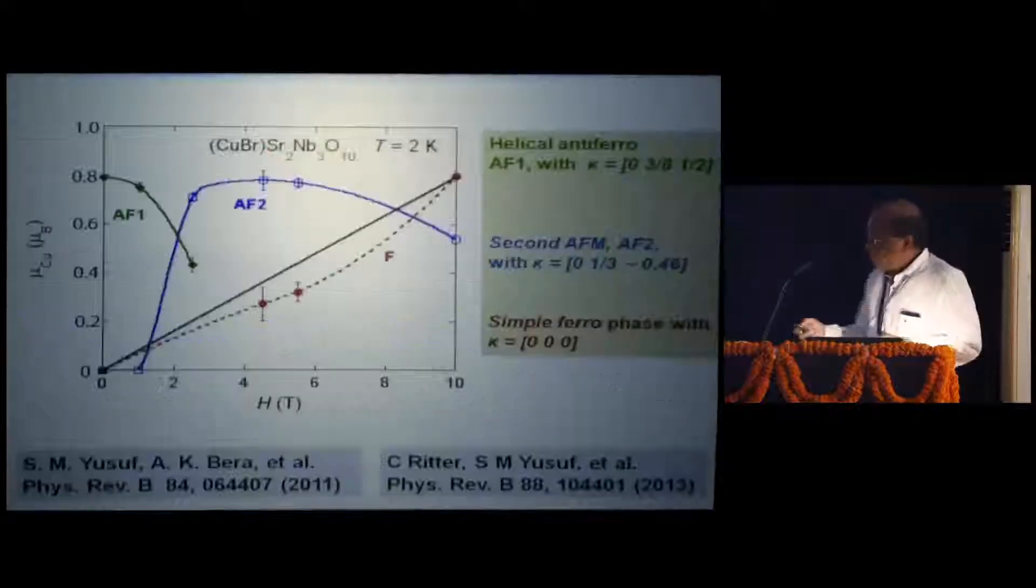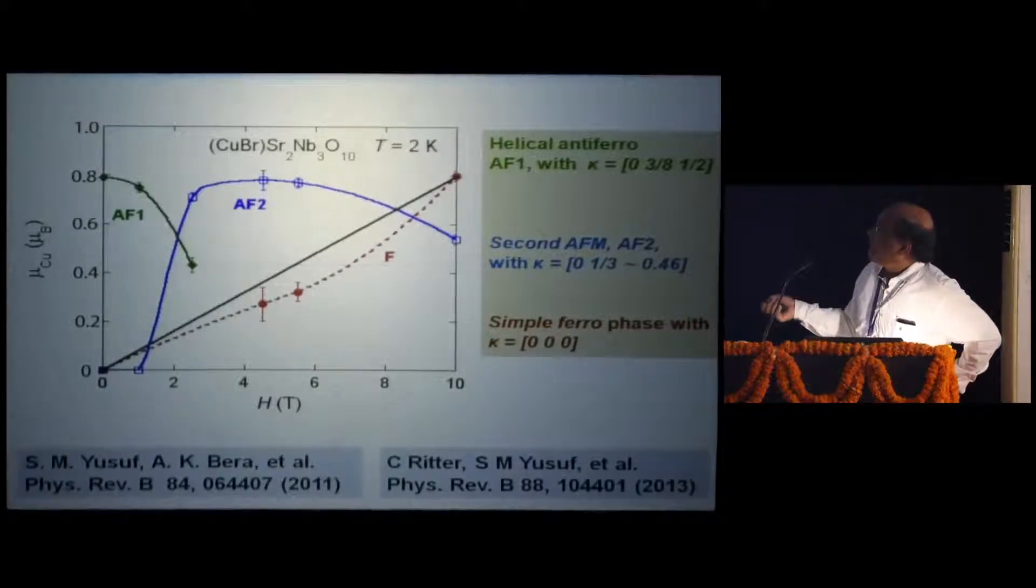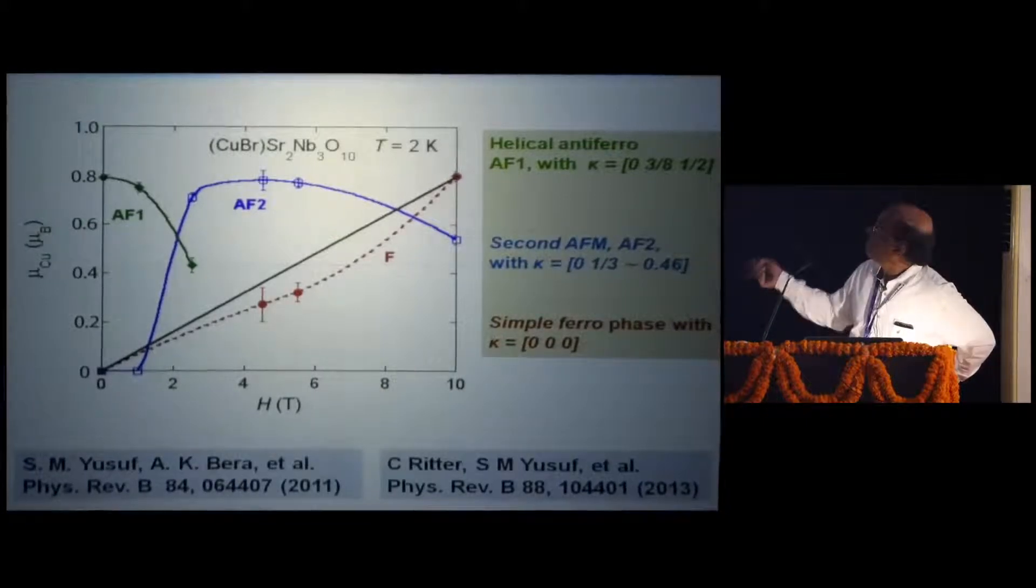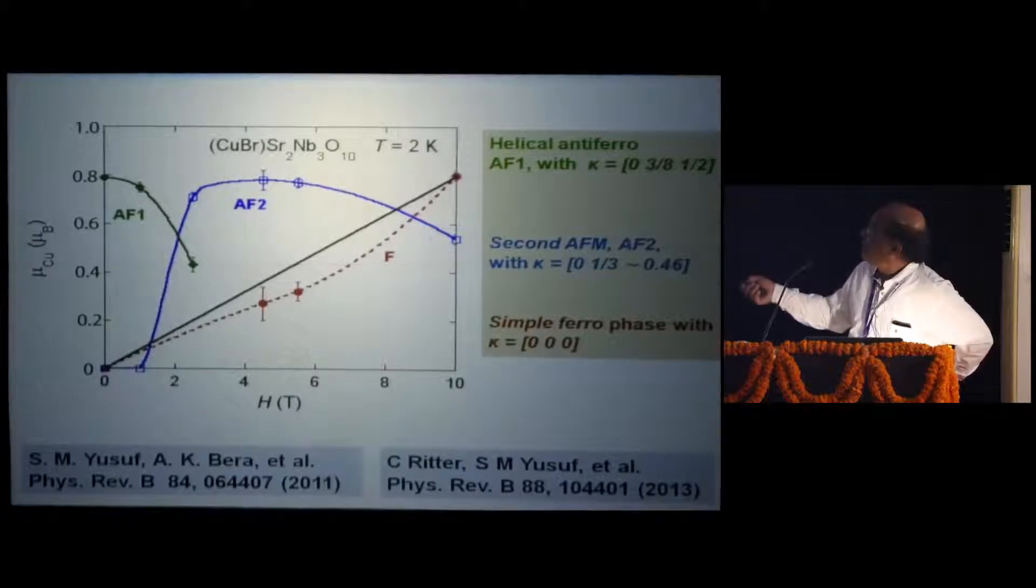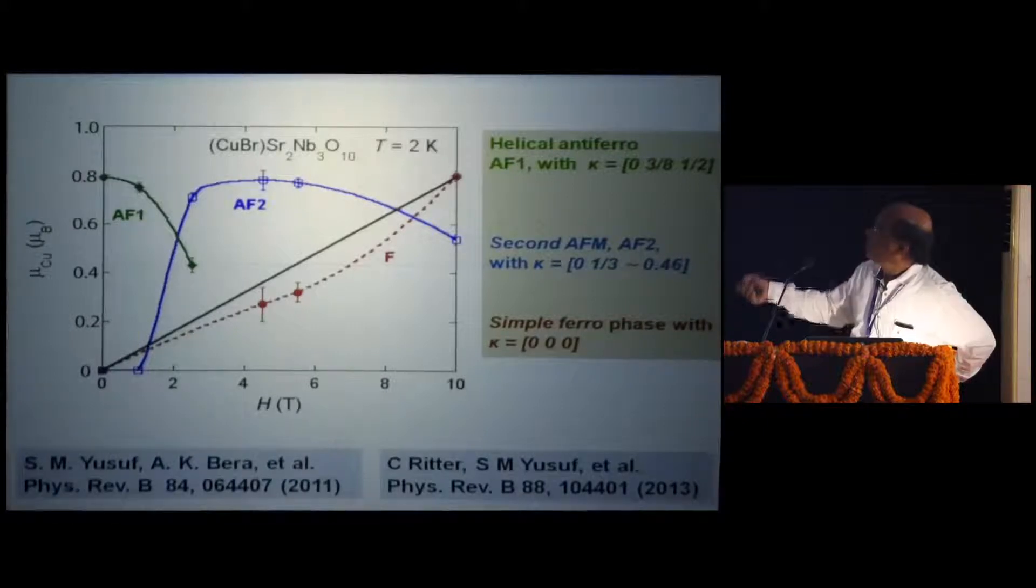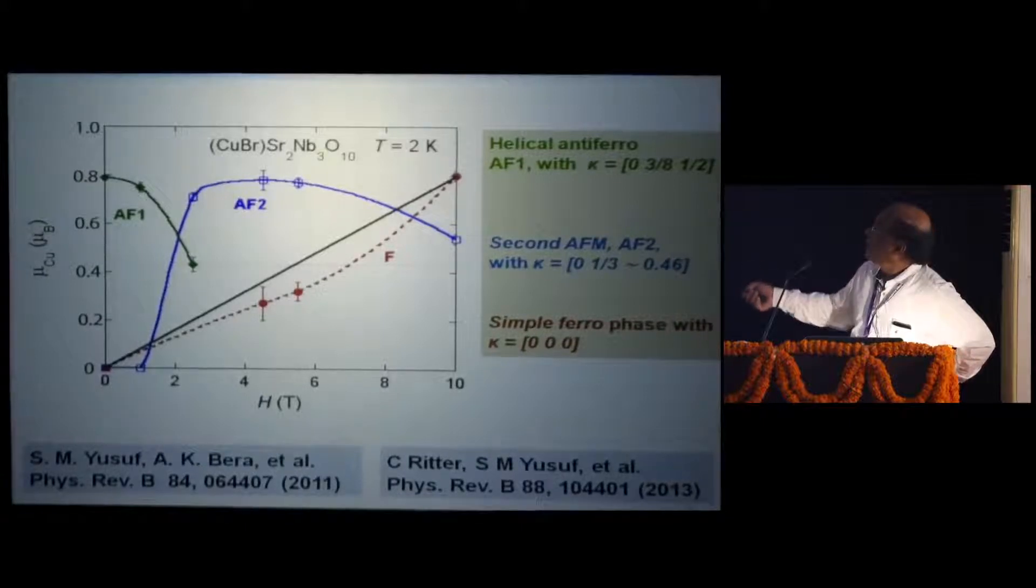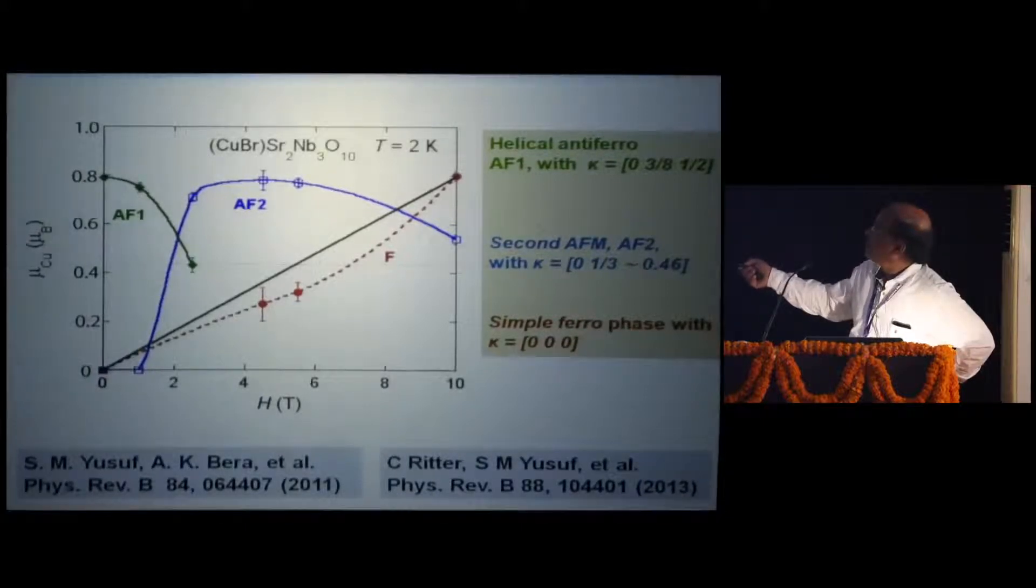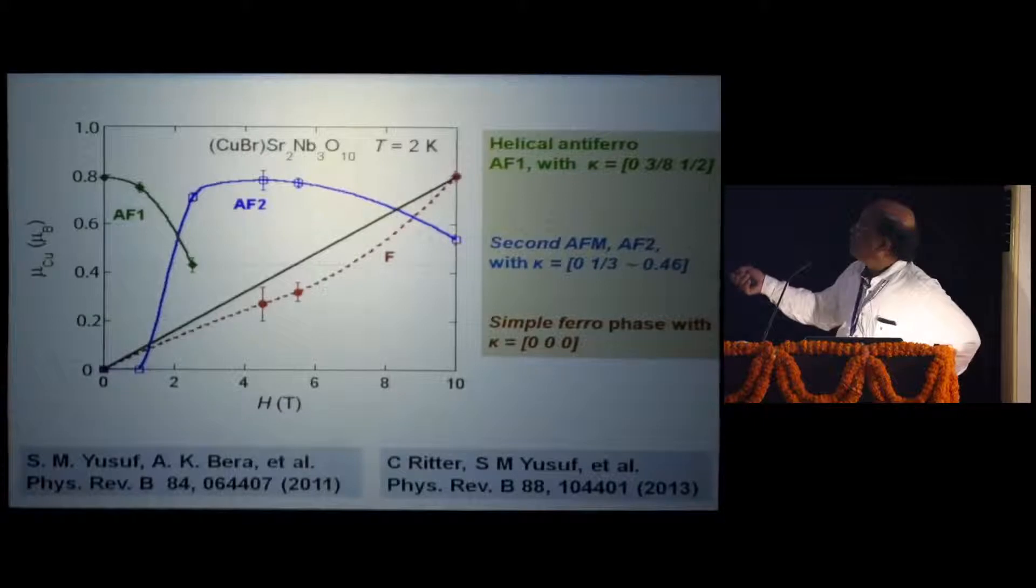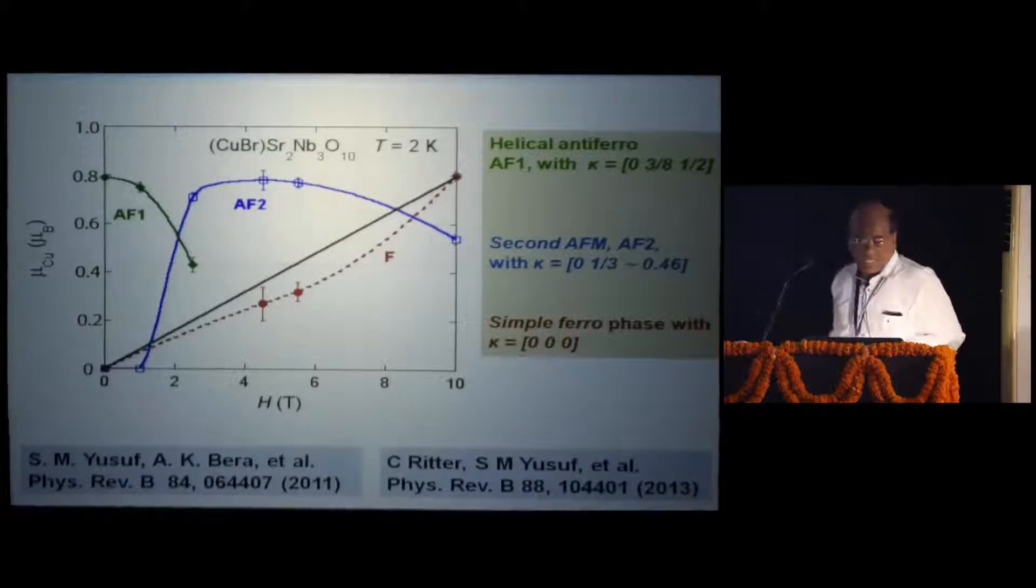We have also extended this magnetic phase diagram in the externally applied magnetic field plane. At zero field, this is the antiferromagnetic phase one with this kind of propagation vector. Then another antiferromagnetic phase builds up around 2 tesla magnetic field, but with some component of ferromagnetic component. Finally, at 10 tesla, beyond 10 tesla, it goes to pure ferromagnetic kind of thing. There is a phase coexistence of ferromagnetic and antiferromagnetic. This is in the H-T plane.